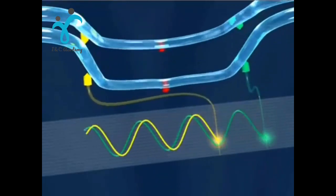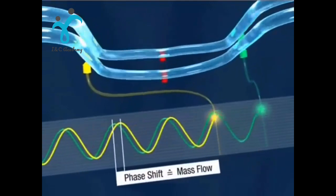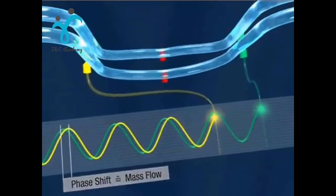A phase shift occurs between the first and the second sensor. The mass flow rate is derived from this phase difference.